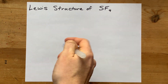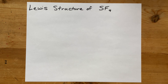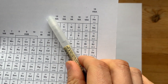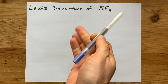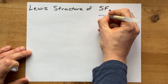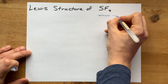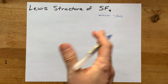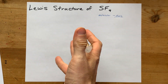We're going to draw the Lewis structure for SF4, that's sulfur tetrafluoride. Sulfur and fluorine are both in the upper right-hand portion of the periodic table. They're both non-metals, and so they're going to form a molecular compound as opposed to an ionic one, and they'll do that by sharing electrons as opposed to transferring from one to another.